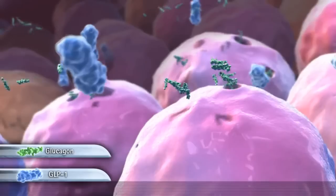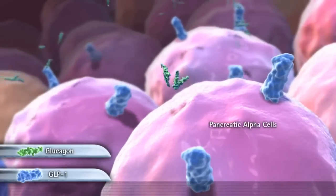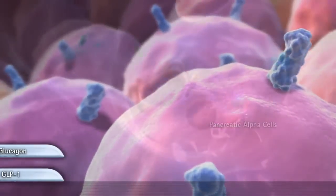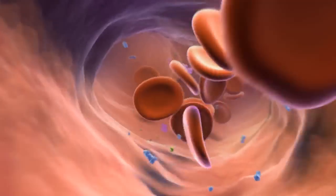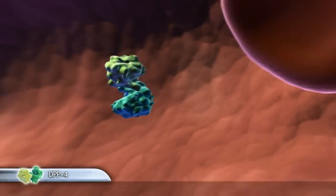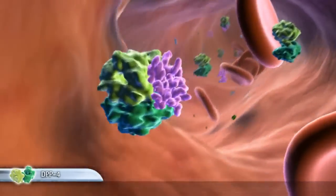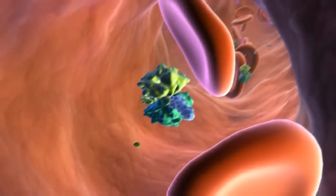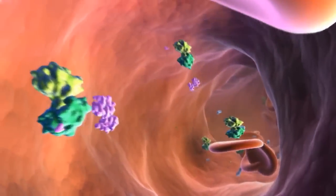GLP-1 also suppresses the secretion of glucagon from the alpha cells of the pancreas. The glucoregulatory effects of incretins are limited by the activity of the dipeptidyl-peptidase-4-DPP4 enzyme, which rapidly degrades the GIP and GLP-1 incretin hormones.